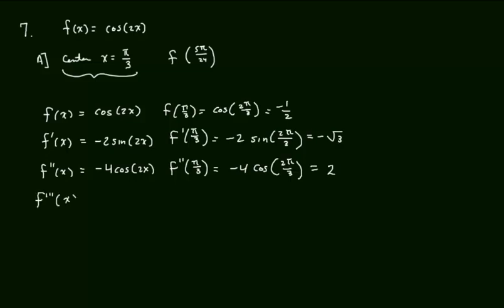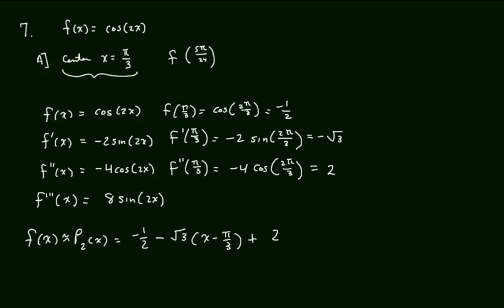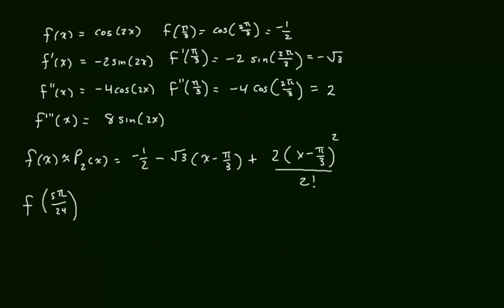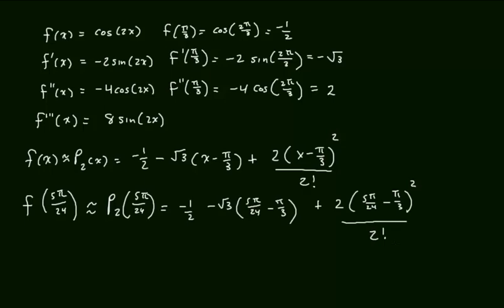I don't need the third derivative yet for the construction, but I'll find it now for error analysis: f‴(x) = 8sin(2x). Our second-order polynomial is f(x) ≈ P2(x) = −1/2 − √3(x − π/3) + 2(x − π/3)² / 2!. We're asked to approximate f(5π/24), which is approximately P2(5π/24), computed by plugging 5π/24 in for x. No need to simplify.